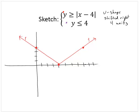So notice that y is less than or equal to 4. Well, if we think of y equals 4, that's a horizontal line at 4. Whereas y less than or equal to 4, well, that would be below that line.